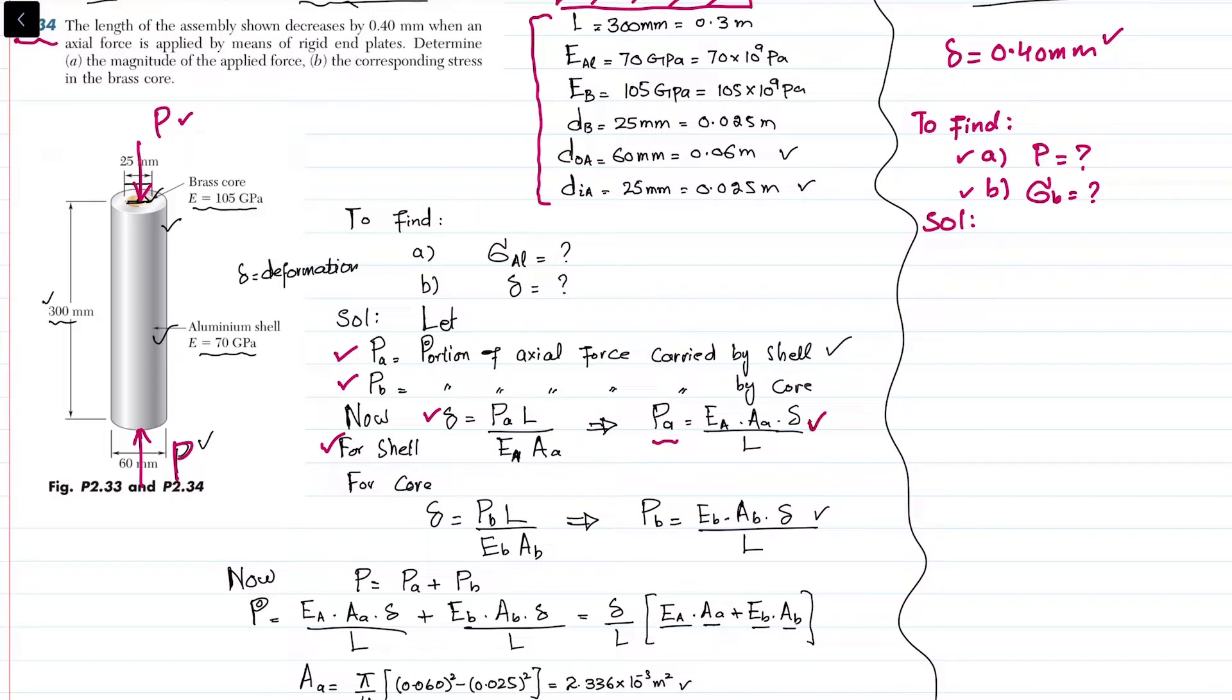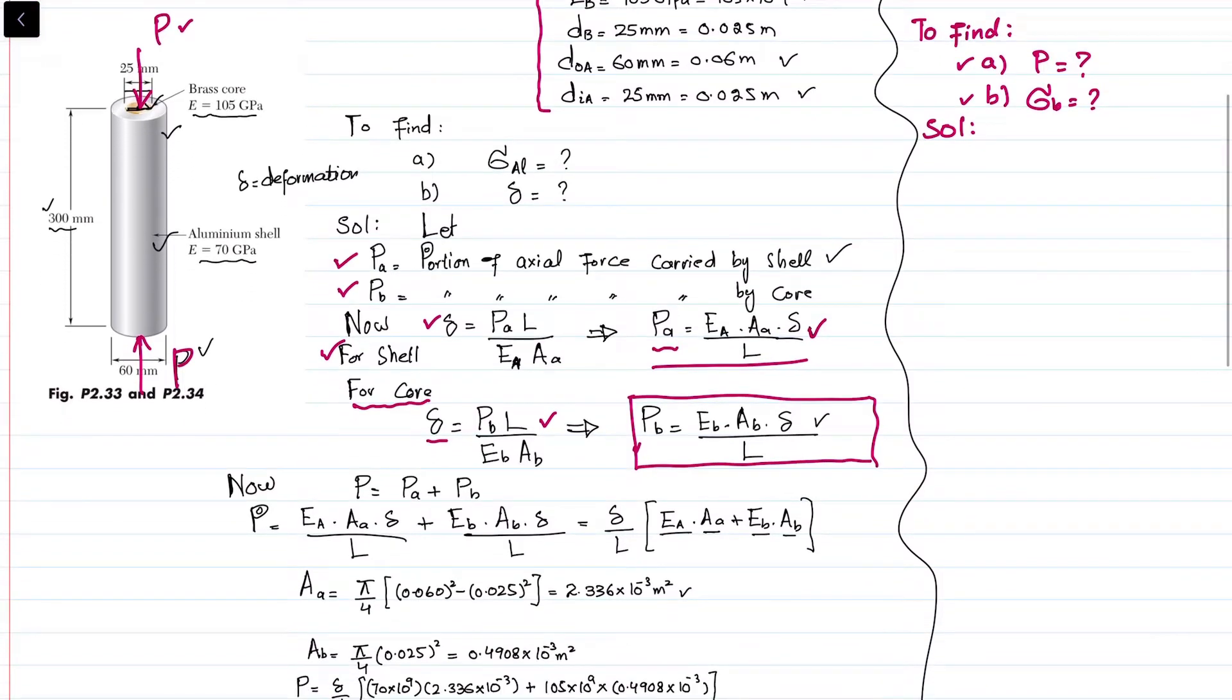For the core, deformation equals Pb times L divided by Eb times Ab, so we can get the load taken by the core. The external load equals the load taken by shell plus load taken by core, so their sum must equal the applied load.